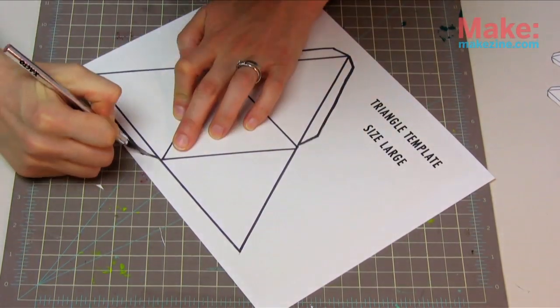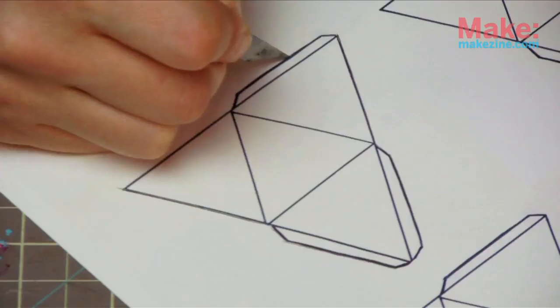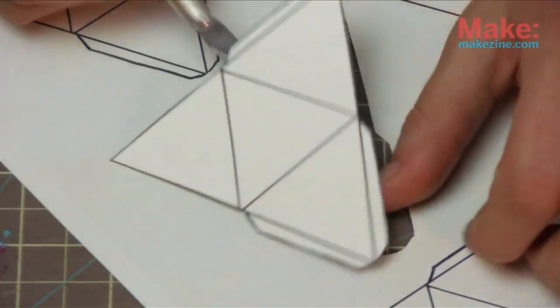Lay your template on a self-healing cutting mat and use an exacto knife or paper scissors to cut them out. Cut several of each size.